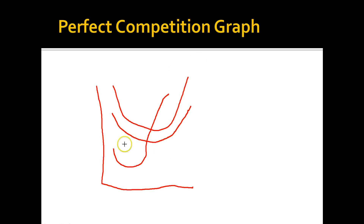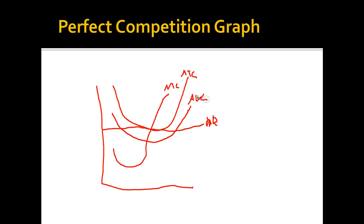The marginal revenue is equal to the demand function for the firm — it's perfectly horizontal. This is what a perfect competition graph looks like, and you need to know this for the AP exam because they'll ask a lot of questions on it. The marginal revenue line intersects marginal cost and average total cost at the minimum point on the average total cost curve. Price is on the y-axis and quantity is on the x-axis.